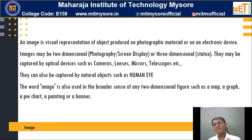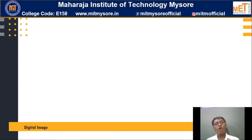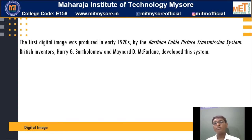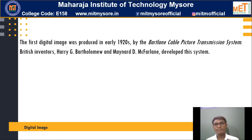When was the first digital image formed? Before that, how was the situation? Before the digital image was formed, there was an image being transferred between London and New York through a submarine cable, and those analog images took more than a week to reach from London to New York. During that period, in the early 1920s, the first digital image was formed using a system called the Bartlein Cable Picture Transmission System, invented by two British inventors, Bartleomive and McFarlane, who developed this system in the early 1920s.